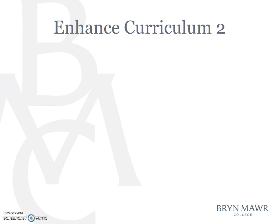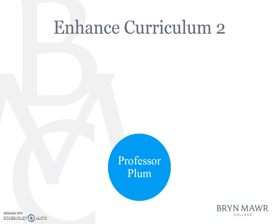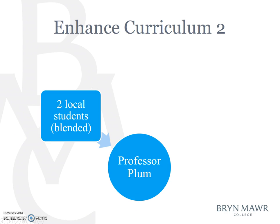Faculty at small institutions have begun experimenting with a very different blended learning model that draws on consortial relationships to support specialized courses and give students access to curricular opportunities that might not be available at their home institution. To illustrate, let's suppose Professor Plum teaches at a small rural college and specializes in Hellenistic philosophy, wanting to offer an upper division course focused solely on this. A couple of his students are longing to take it, but he hasn't been able to recruit enough to meet minimum enrollment requirements. He knows of similar colleges that do not have a Hellenist specialist, and suspects he could attract a quorum if he could invite their students to take the course remotely.